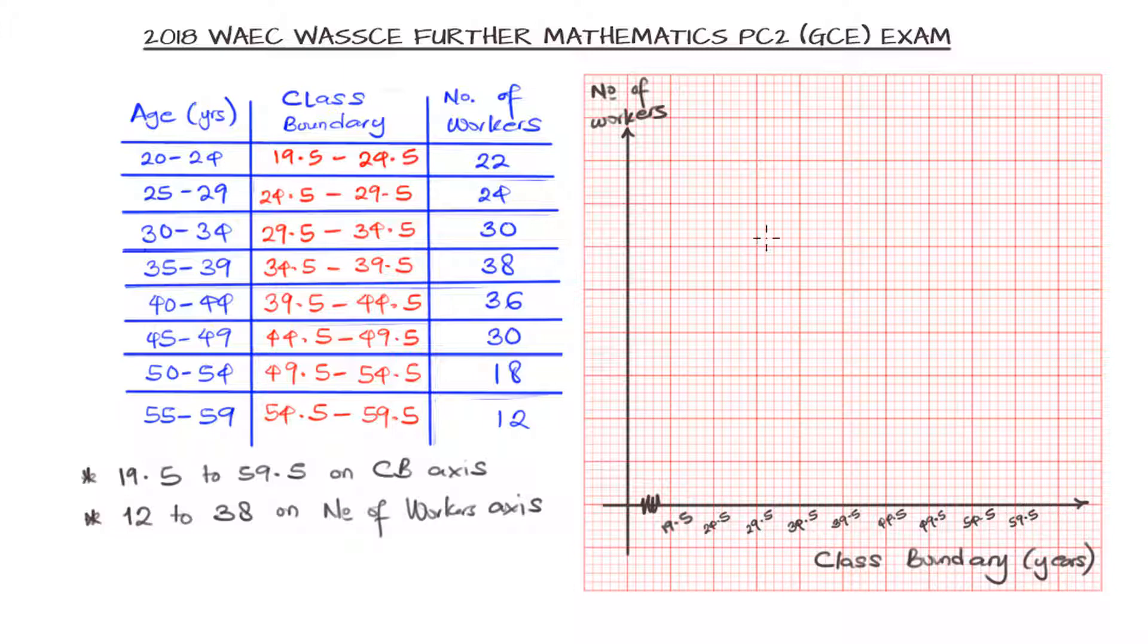We will notice that in this we are having a spacing of 5 units, because from 19.5 to 24.5 is 5 units. Now our unit here is years, so we can put our scale that 2 centimeters, which is the space between the ticker lines of the graph, represents 5 years on the class boundary.